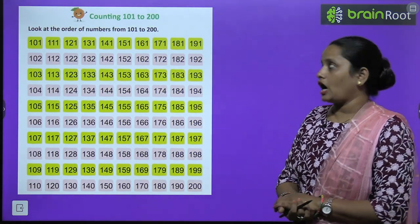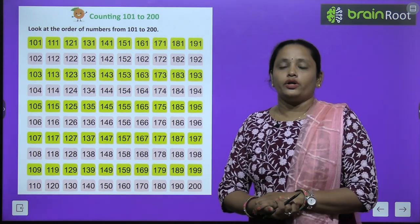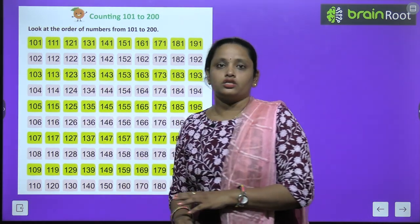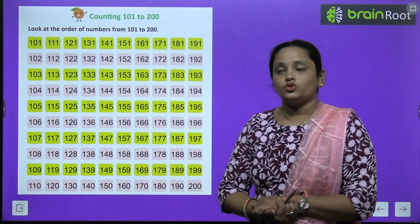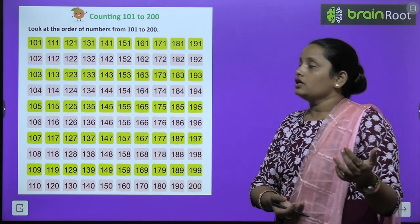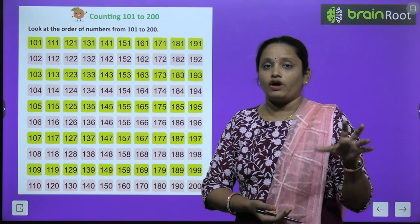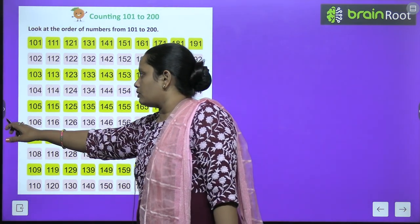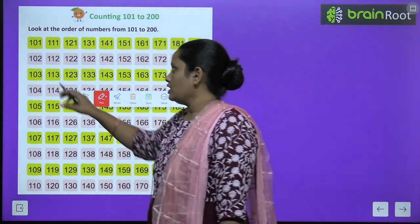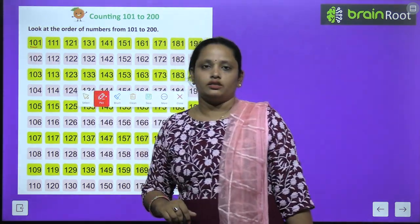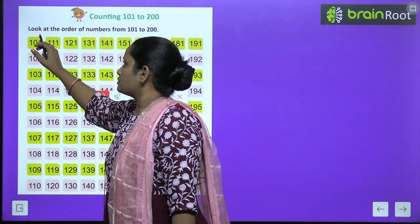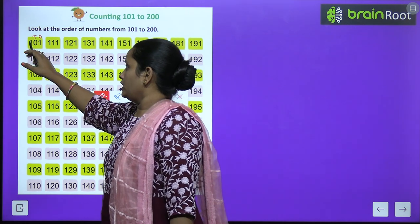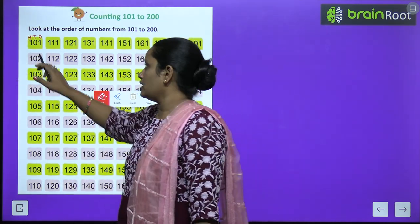Here you can see there are some counting numbers given in front of you. Which numbers are these? From 101 to 200 — these are the numbers. Look at the order of numbers from 101 to 200. We have already studied numbers up to 100. Now we will read from 101. The number that comes after 100 — 99 ke baad aata hai 100, and when we add 1 to 100 we get 101. How do we read it? The 1 on the 1's place, 0 on the 10's place, and the first 1 is on the 100's place — so we read it as 101.